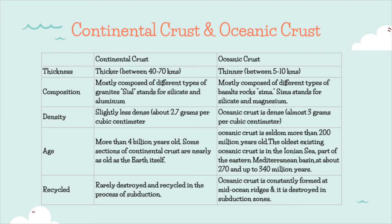With respect to composition, continental crust is mostly composed of different types of granite. Geologists often call it 'Sial,' where Si stands for silicate and Al stands for aluminum. Oceanic crust, on the other hand, is composed of different kinds of basaltic rock. Geologists often call this 'Sima,' where Si stands for silicate and Ma stands for magnesium. The density of the continental crust is 2.7 grams per cubic centimeter, while oceanic crust is 3 grams per cubic centimeter — making oceanic crust higher in density.